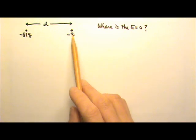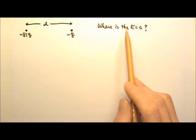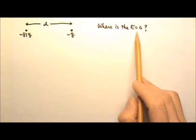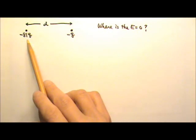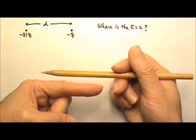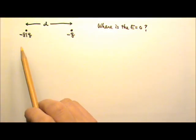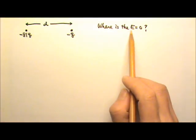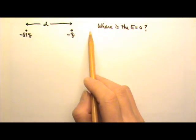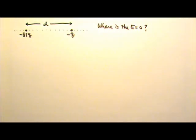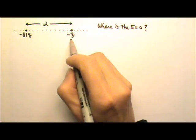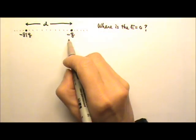There are two point charges producing electric fields. In order for the net electric field to be zero, the two fields produced by the two charges must be equal and opposite so they can cancel. That means the location where the electric field is zero must be somewhere along this line, and because the two fields have to be equal, the location must be closer to the weaker charge.